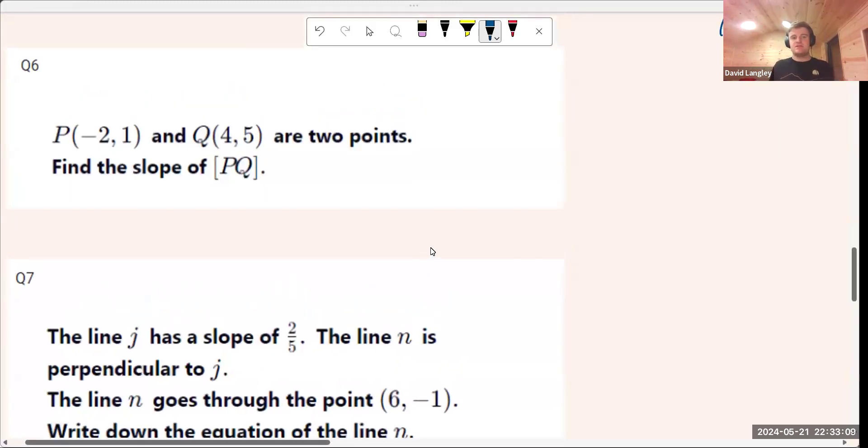The first question was P is minus 2, 1, and Q is 4 and 5. Find the slope of PQ.